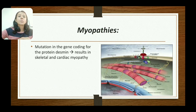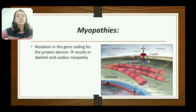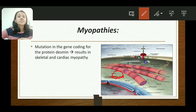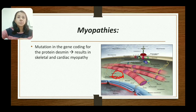Next is myopathy, caused by mutation in the gene coding for the protein desmin. Desmin connects the Z-line to the sarcolemma. Mutation in the gene coding for desmin results in skeletal and cardiac myopathy.